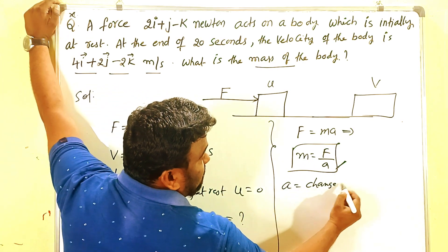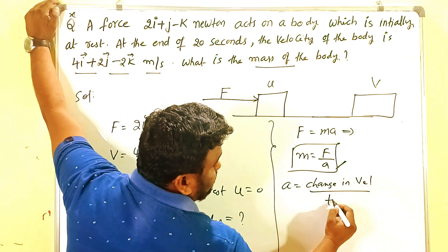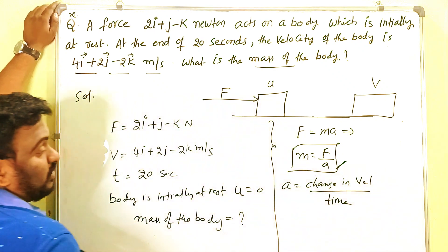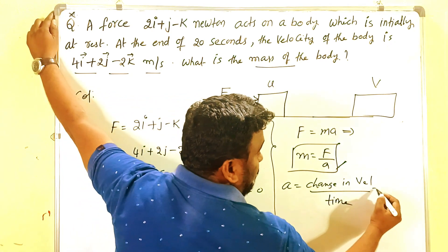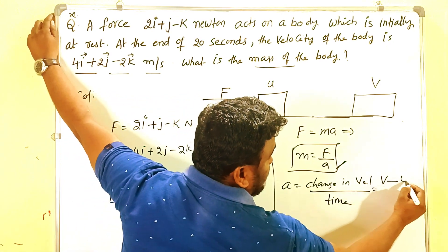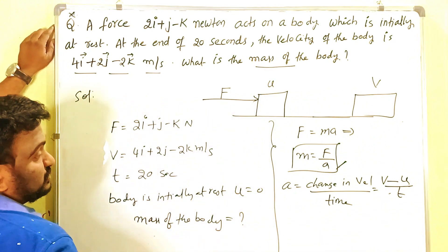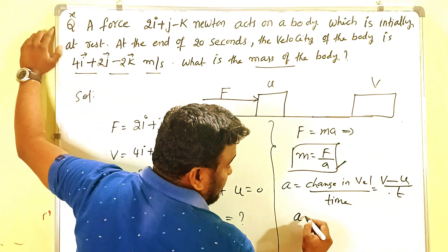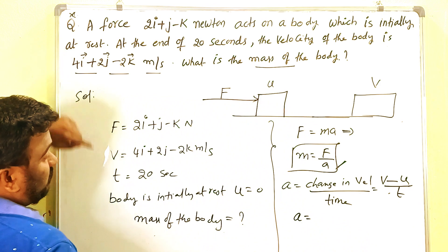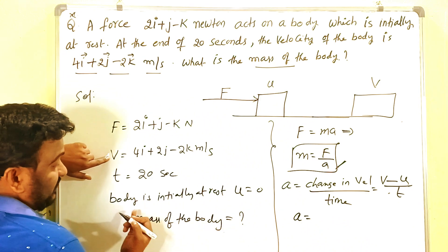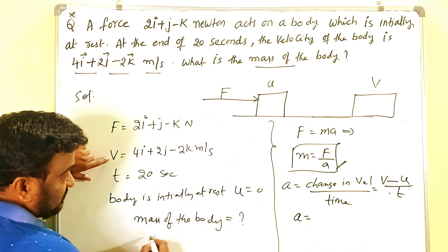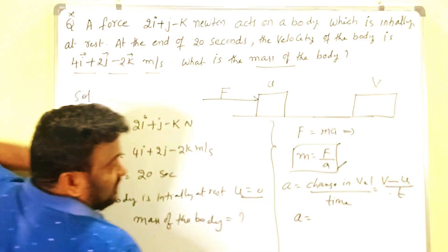Acceleration equals V minus U by T. Now you have to substitute the values. A is V minus U. What is U here? Zero. That means you have V, which is 4i plus 2j minus 2k.